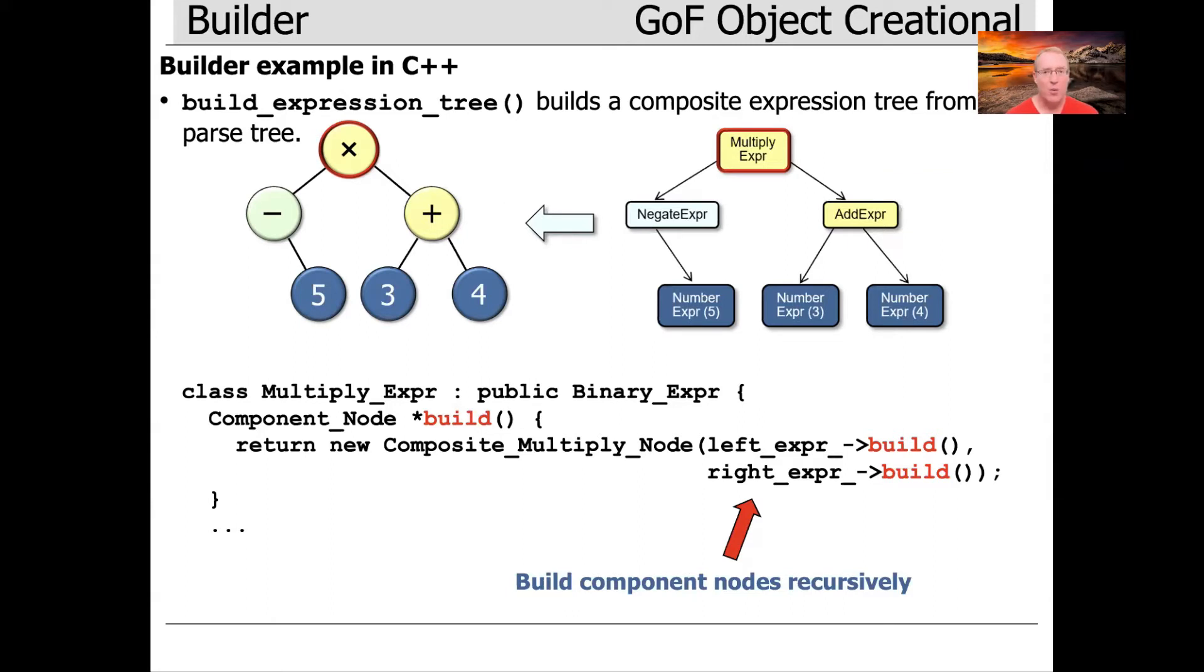We're going to start out with the root, which in this case is an expert pointer that points to a multiply expert node. You can see that when the multiply expert node's build method is called, it creates a new composite multiply node where the left and right children are based on what's returned from left expert arrow build and right expert arrow build.